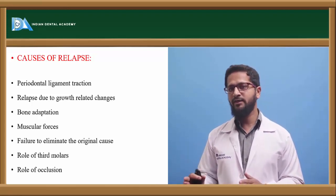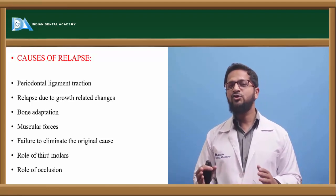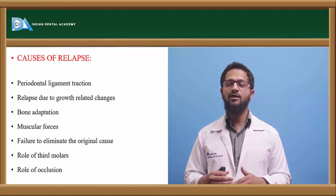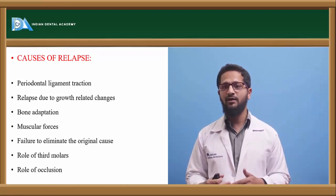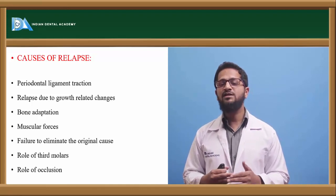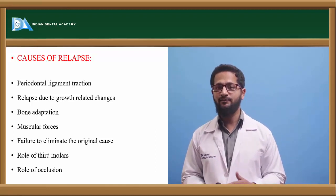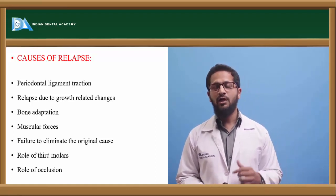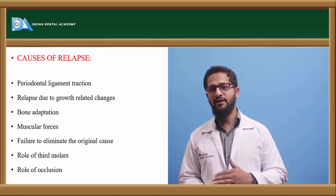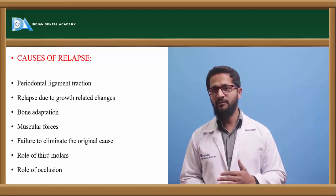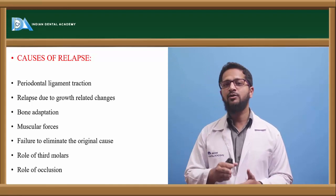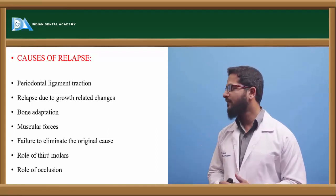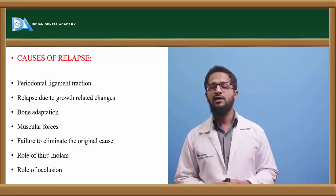The third cause is bone adaptation. When a tooth moves to a new position in the bone, it is covered by less-calcified bone. This bone requires time for remodeling to become dense and calcified. Initially the bony trabeculae are arranged perpendicular to the long axis of the tooth, but when orthodontic forces are applied they become parallel to the direction of force; during the retention phase they return to their original position. The bone should be given sufficient time to reorganize.